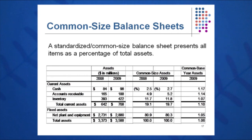That's going horizontally year over year, and again you can look for problems to see if your receivables are going up too fast, if your inventory is going up too fast, and so on. These common size analyses can help us begin to detect problems.